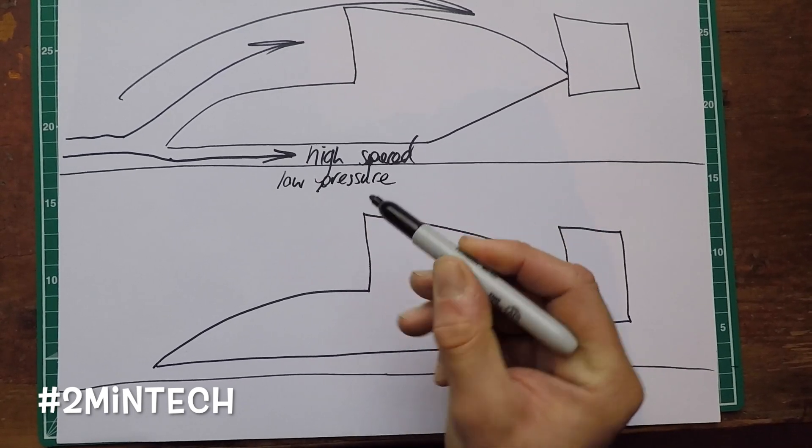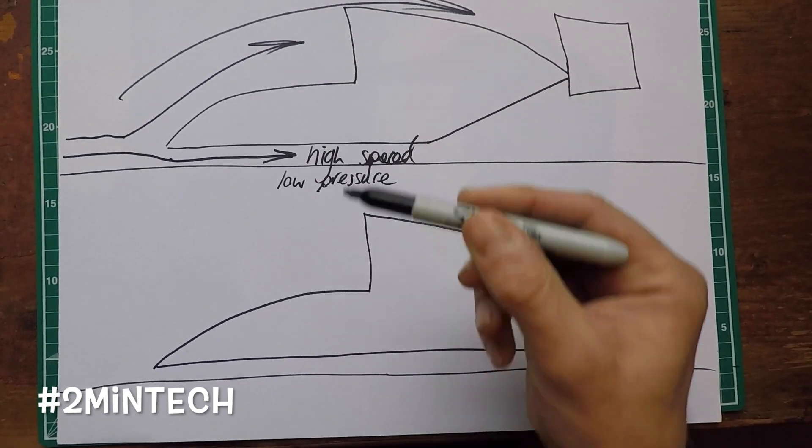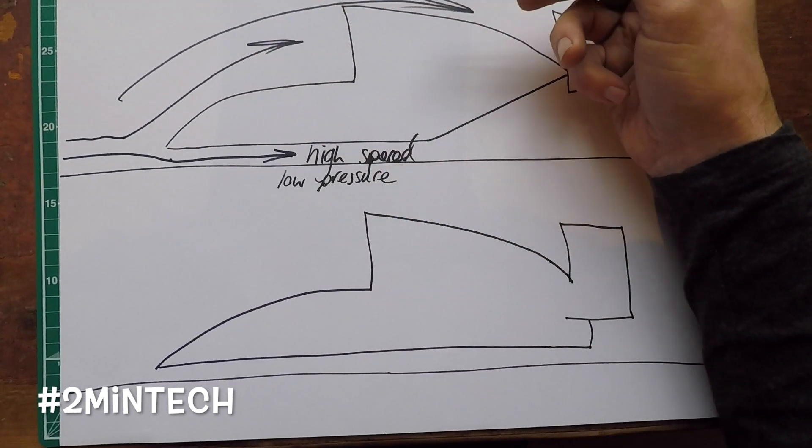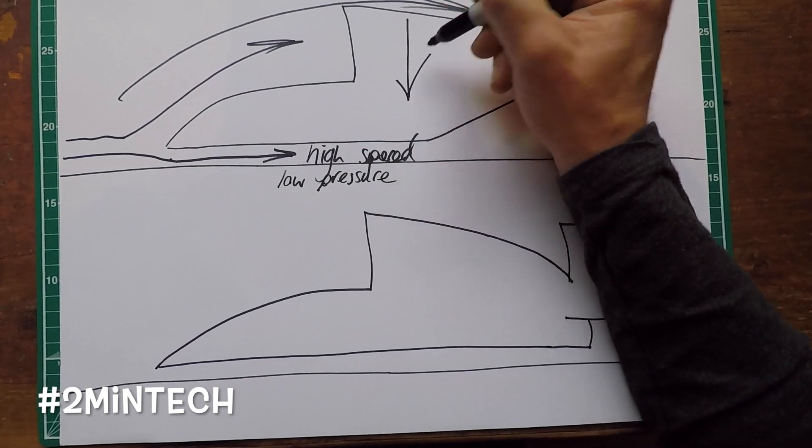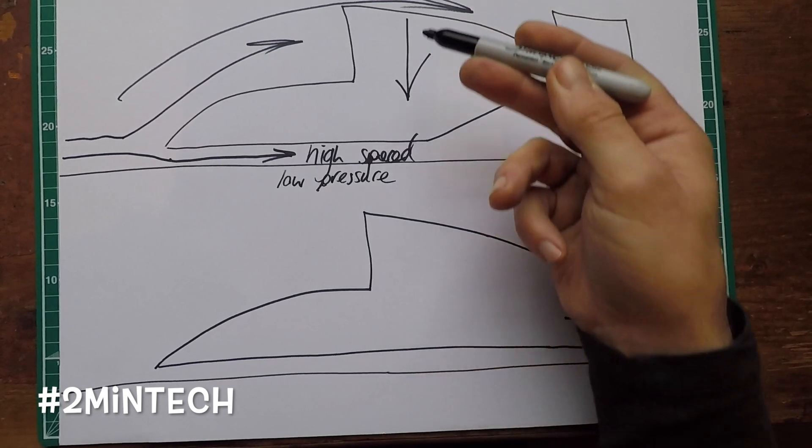Essentially a partial vacuum being formed underneath the car. Ambient pressure, high pressure above the car, low pressure beneath the car means that the car is being forced down into the race track. Downforce.